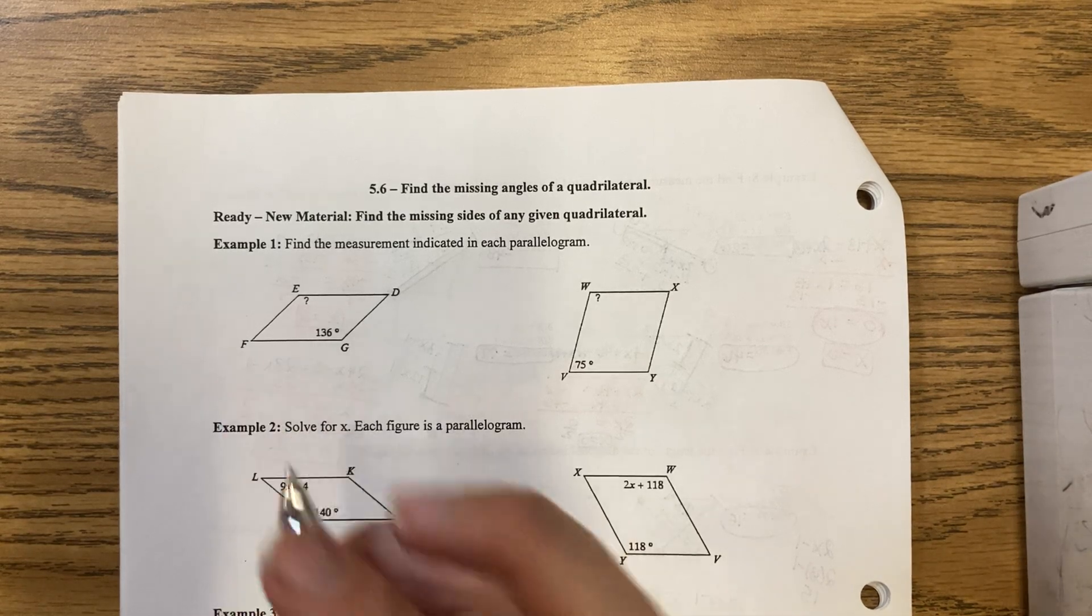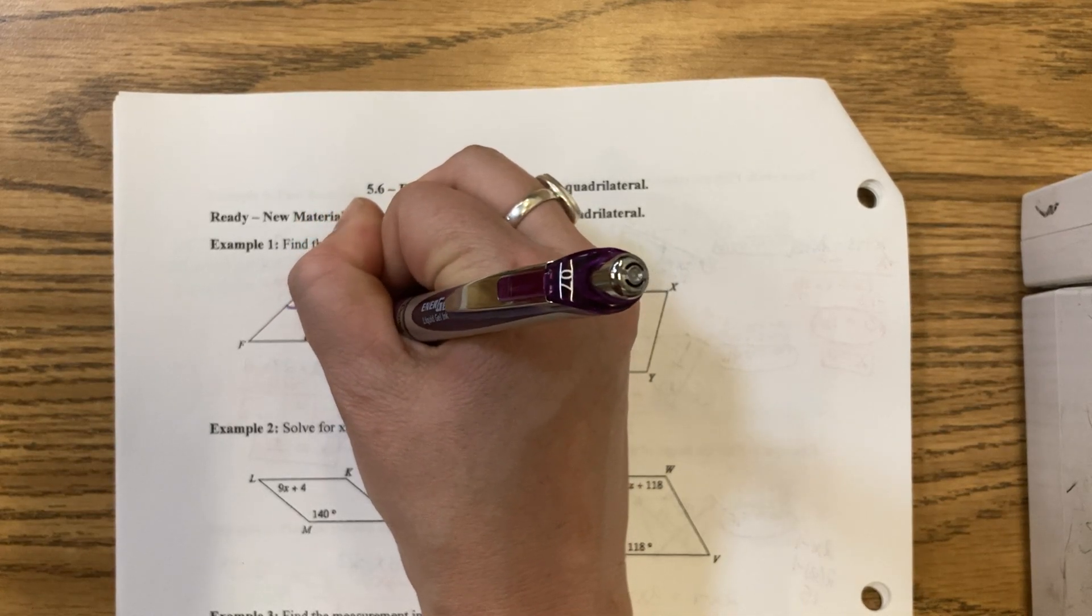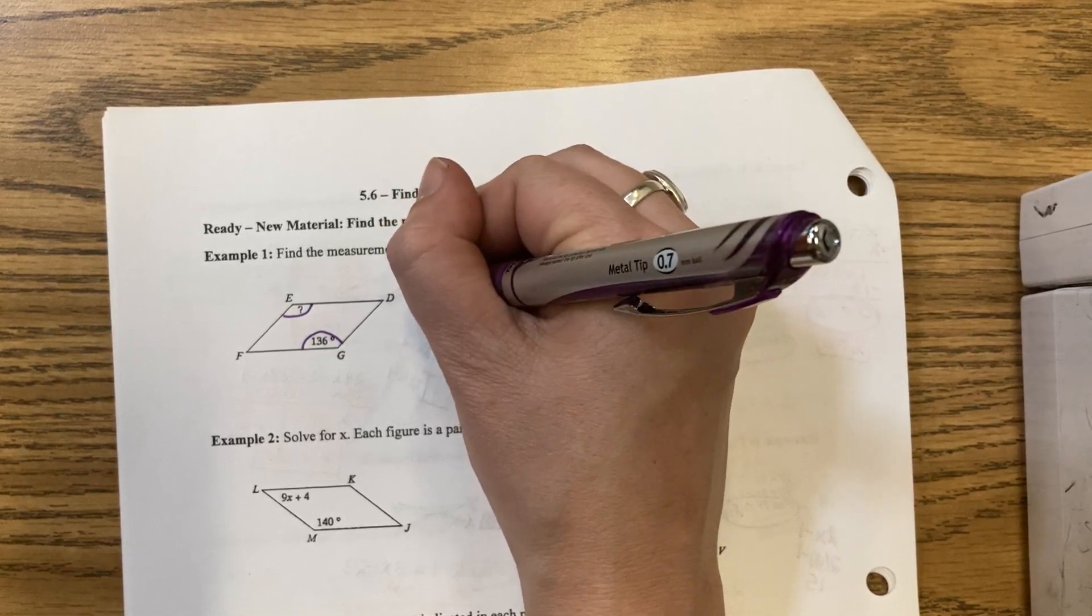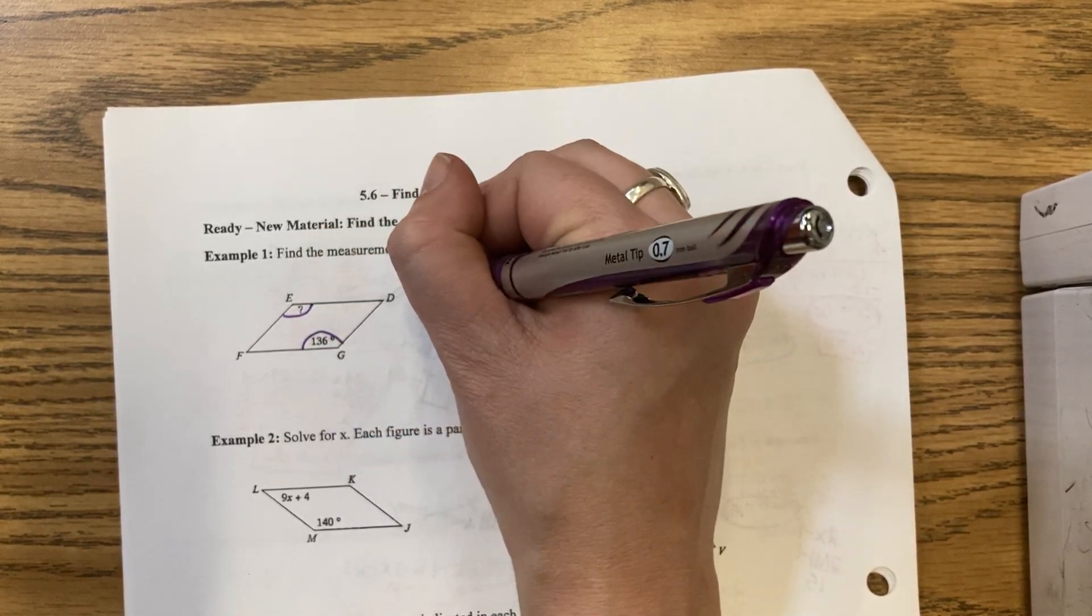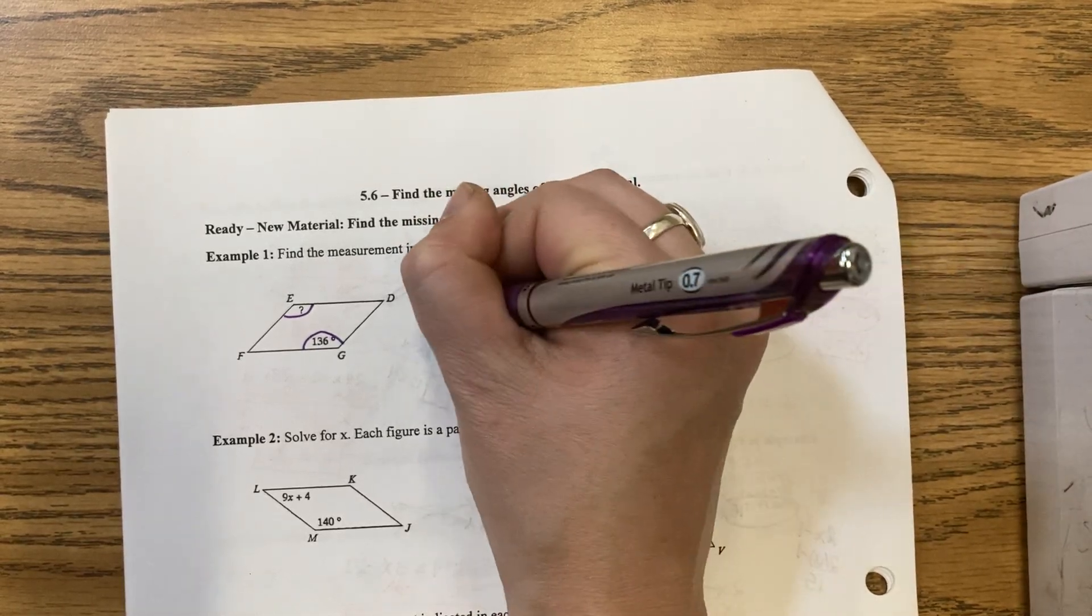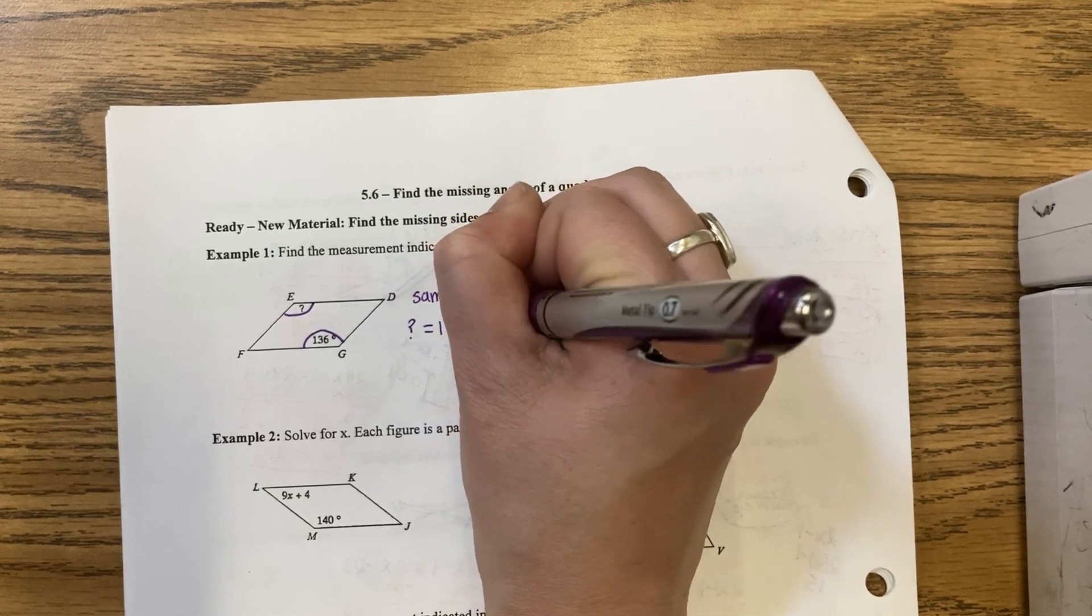When I look at what is given, I have a question mark and 136. Angle E and angle G are the same size, so I will say that the question mark equals 136.